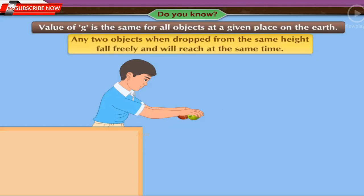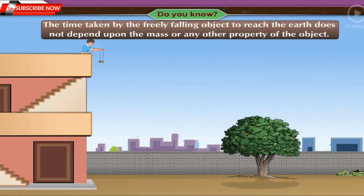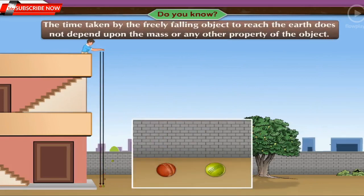Therefore, any two objects when dropped from the same height fall freely and will reach at the same time. The time taken by the freely falling object to reach the earth does not depend upon the mass or any other property of the object.